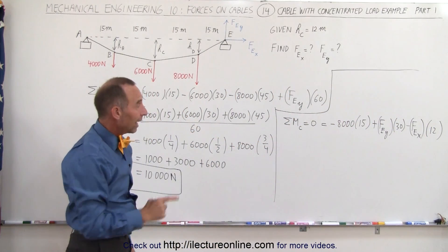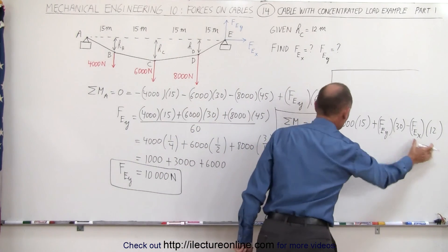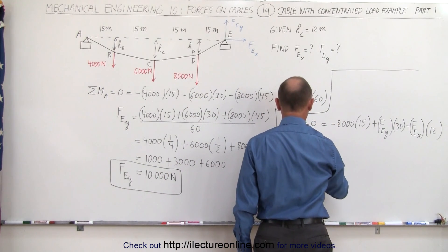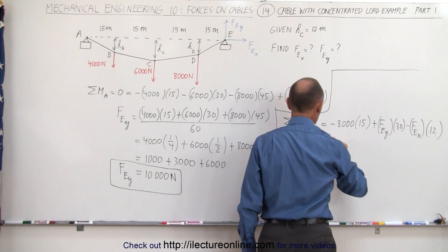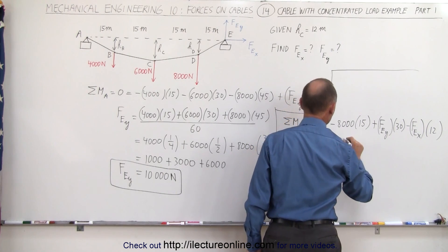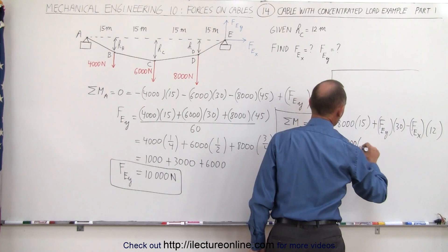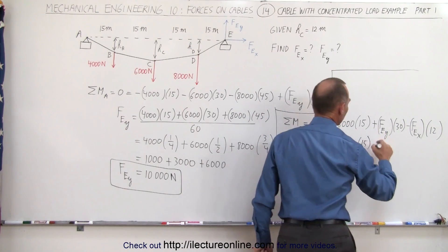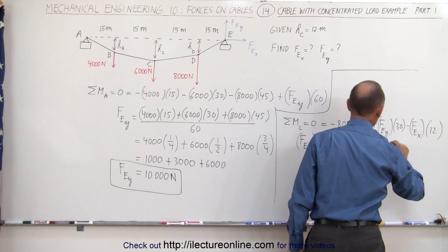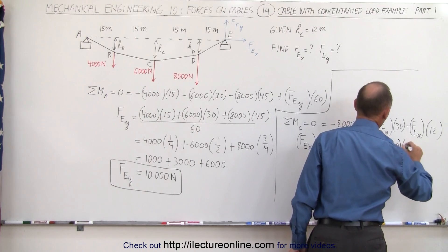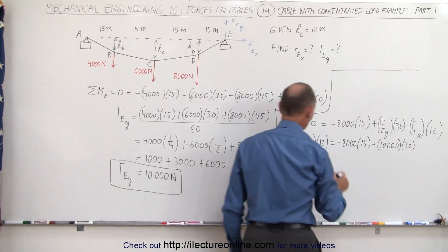Okay, we can now solve for F_E_x. We can move that across here, so we have F_E_x times 12 is equal to minus 8,000 times 15, and this would be plus 10,000 times 30. Of course, we can divide both sides by 12.